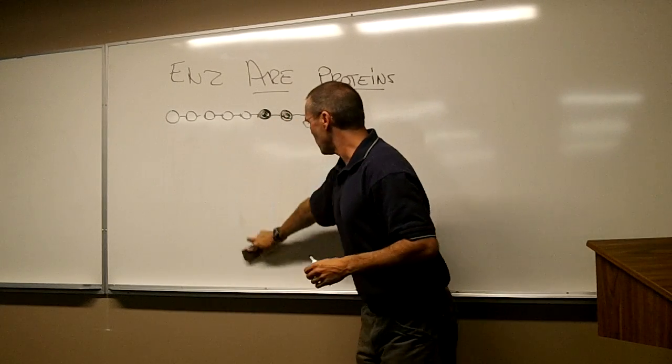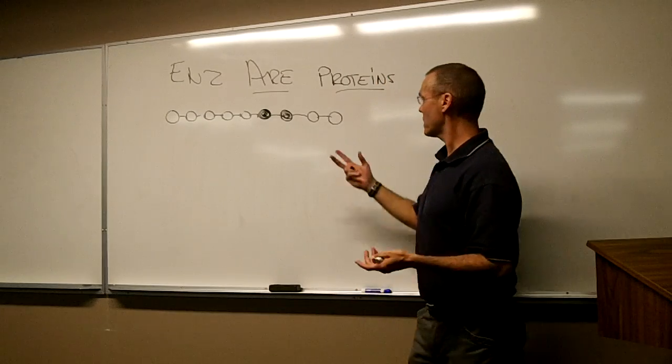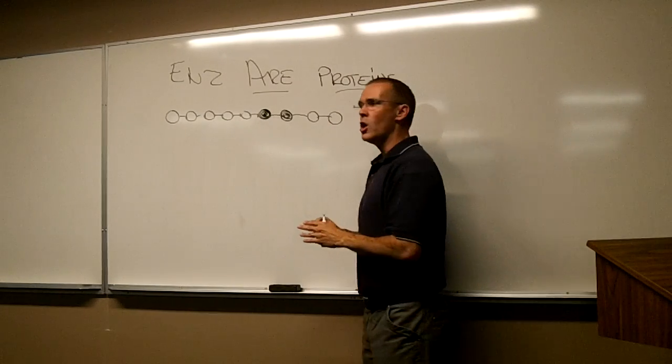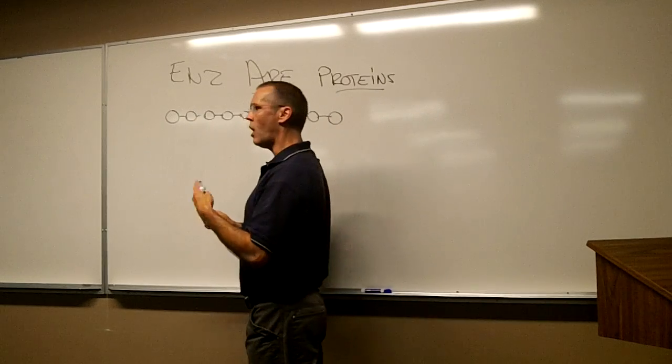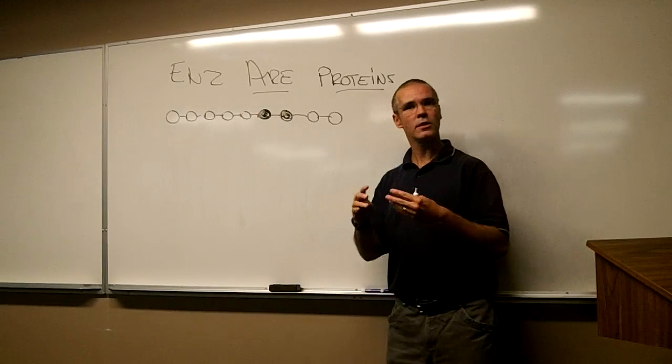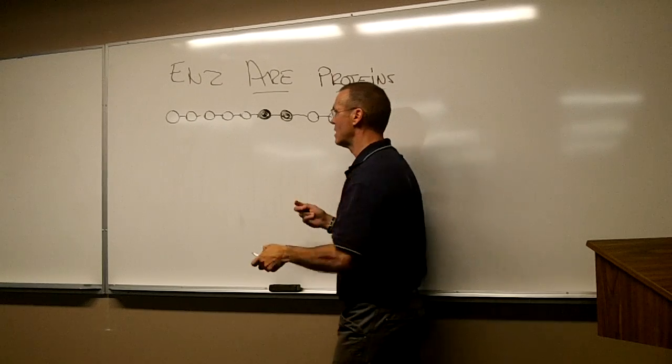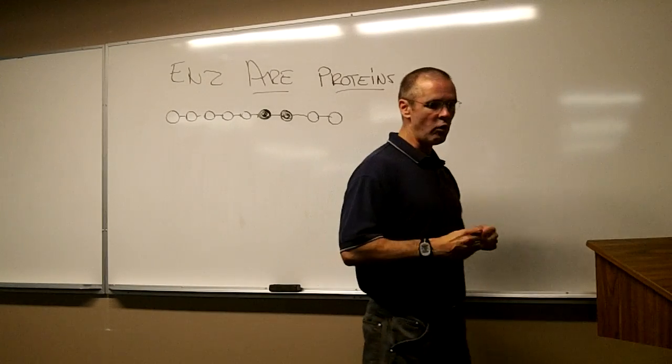The worst way of looking at a protein and thinking, oh, that's a protein right there. Well, that's not true. A protein also has a shape. It has a three-dimensional shape. Why is that? Because it is folded.